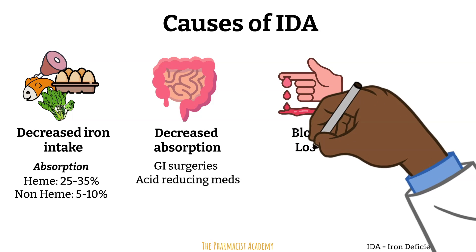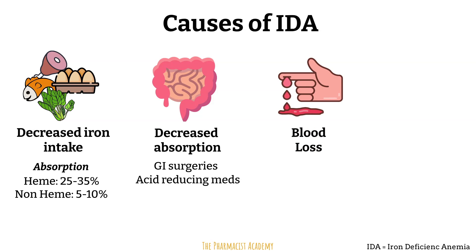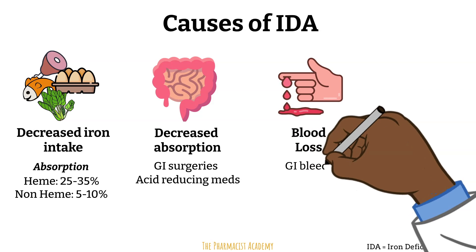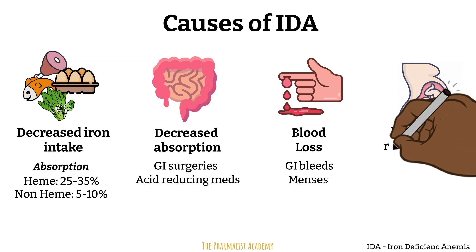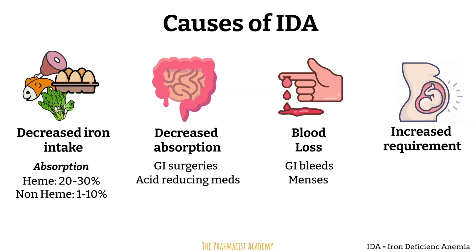Blood loss: if you lose blood, you lose red blood cells; if you lose red blood cells, you lose hemoglobin; if you lose hemoglobin, you lose the iron within the hemoglobin. The blood loss can be due to GI bleeding, menstrual bleeding, or even an injury. Lastly, increased usage — an increased iron requirement and increased red blood cell production is required when the body is going through changes, such as a growth spurt in children and adolescents, or during pregnancy and lactation.